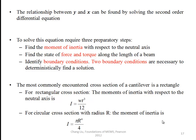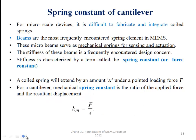For a beam with circular cross section, the moment of inertia I equals πR⁴/4. Next is the spring constant of cantilever.